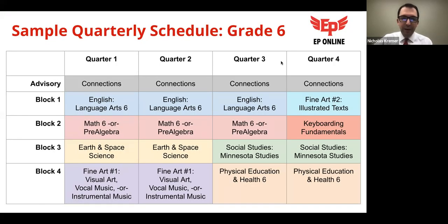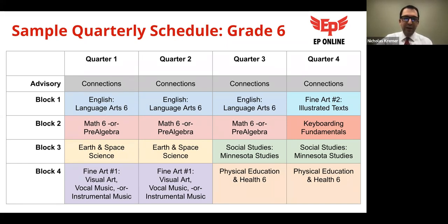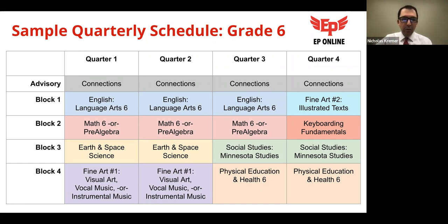Now let's take a deeper dive into what the schedule looks like. We're on a block schedule, so we'll show sixth, seventh, and eighth grade separately. Each has similar features — students start the day with the connections advisory and then have four different courses blocked throughout the day. In sixth grade, students will be in an English language arts course for three quarters and a math course — either Math 6 or pre-algebra if on the accelerated track — for three quarters as well.